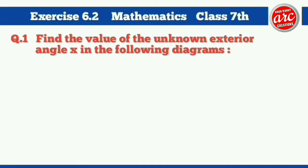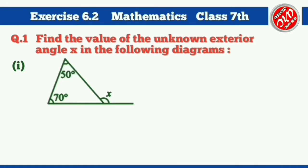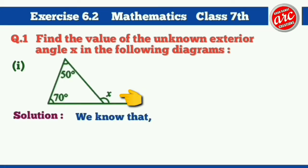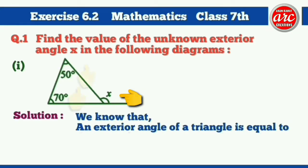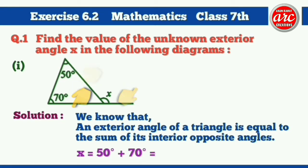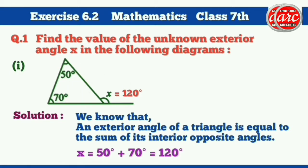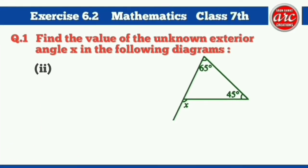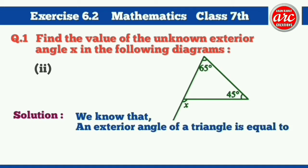Solution: We know that an exterior angle of a triangle is equal to the sum of its interior opposite angles. So X is equal to 50 degrees plus 70 degrees, which is equal to 120 degrees. Hence, angle X is equal to 120 degrees.